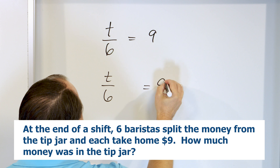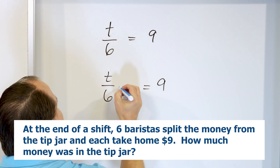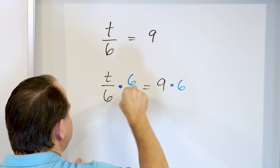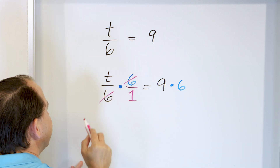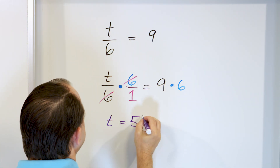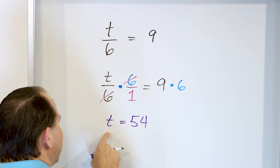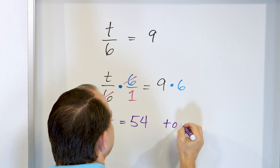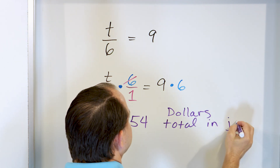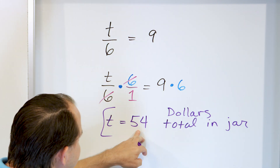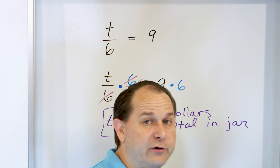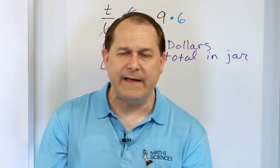T over six equals nine. We're dividing by six here, so we have to do the opposite — multiply by six on both sides. The six on the top and the six on the bottom cancel. All we have left is T on the left. Nine times six is 54. So T equals 54 — that means there was $54 total in the jar. Let's check: if there really was $54 in the tip jar, 54 divided by six is nine, and everybody gets $9. That's exactly how we divide a tip jar evenly.